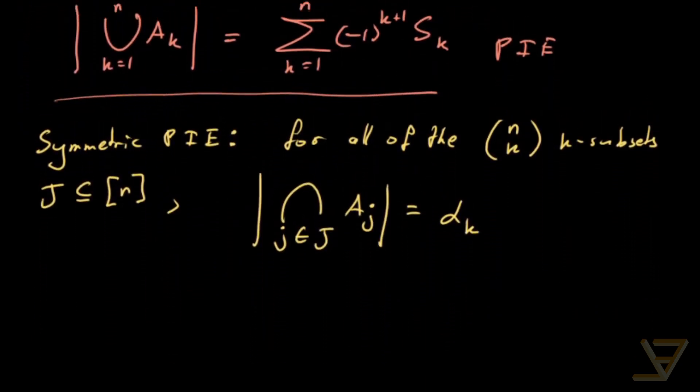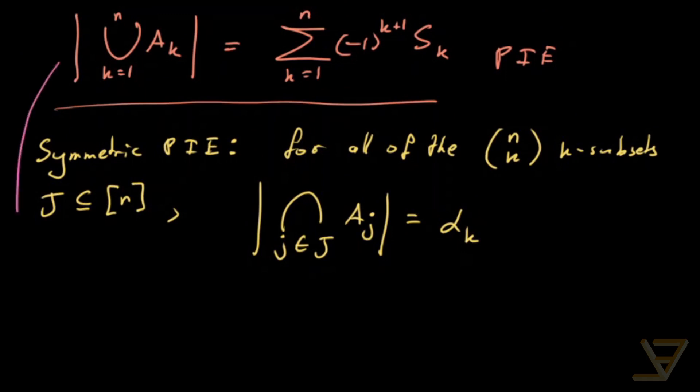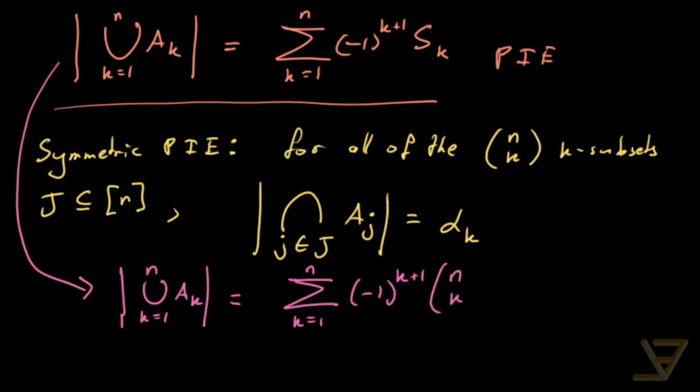What that allows us to do is write the principle of inclusion-exclusion in a simplified manner, in this symmetric PIE. What we get is that the union of the k equals 1 through n of the ak is equal to the sum of k equals 1 through n. And what we have is that we still have an alternating sum with alternating signs. But since there are n choose k of them, and they're all equal to alpha k, this is the formula in the end.